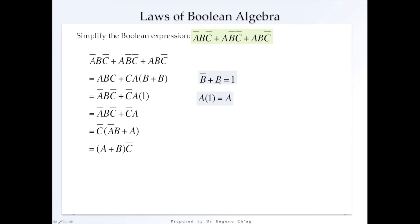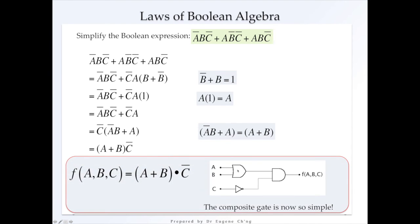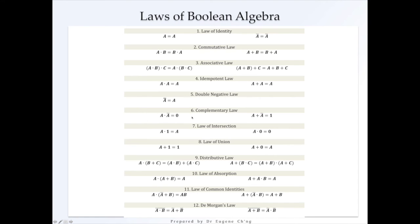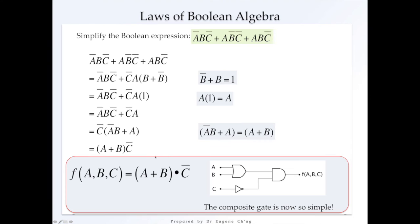So we have a look. So NOT B OR B will be 1. A AND 1 will be A. And you've got the other principles which you can refer to in the Laws of Boolean Algebra chart I've included here.